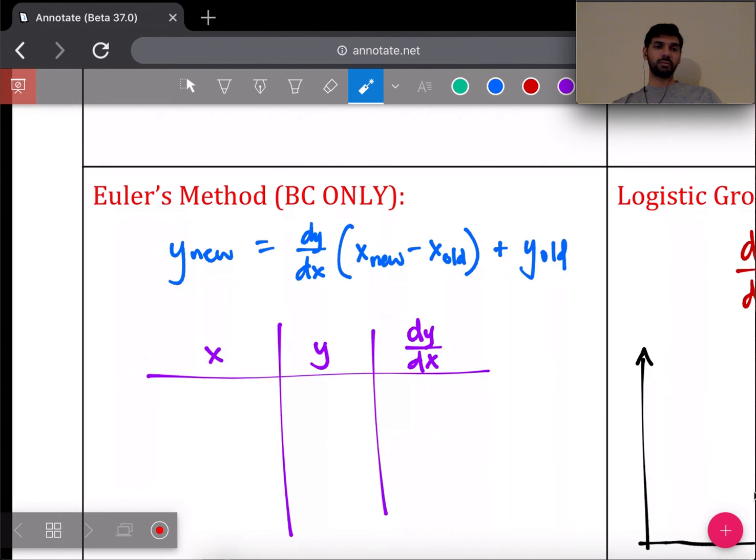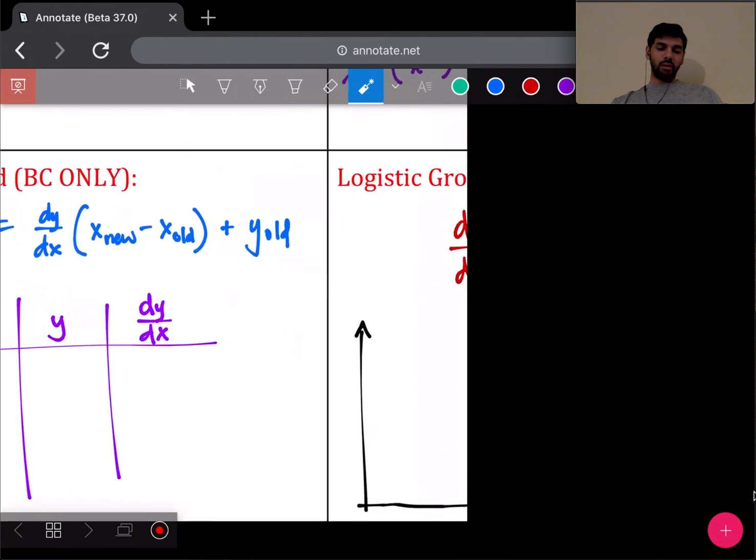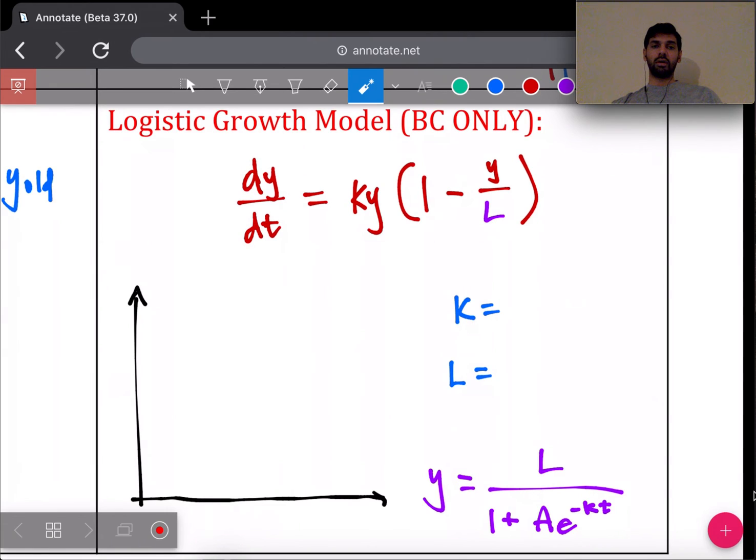The last box down here is the logistic growth model. This is also a BC only topic. The logistic growth model is a differential equation that looks like this: dy/dt = ky(1 - y/L), and L is what we call the carrying capacity.